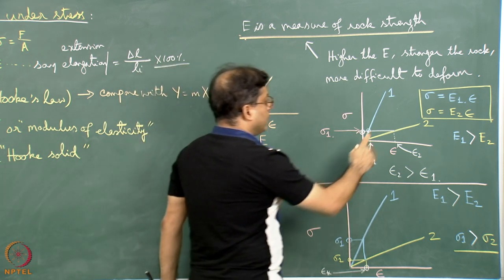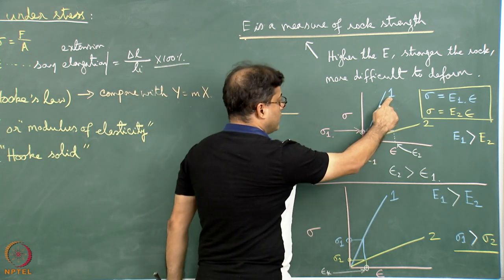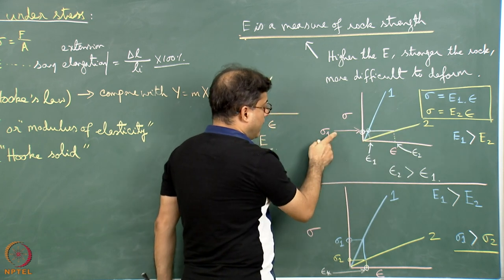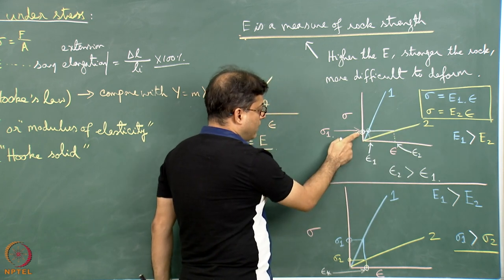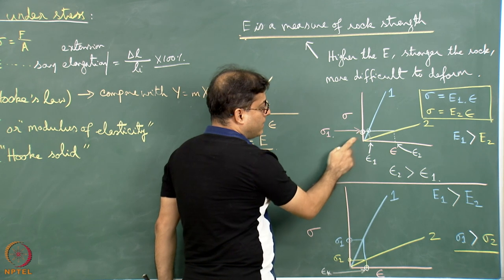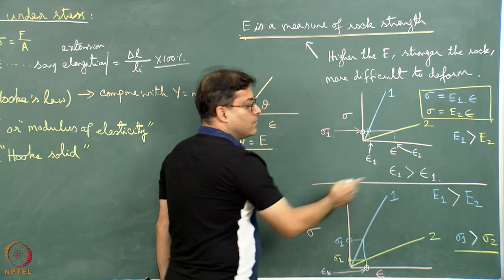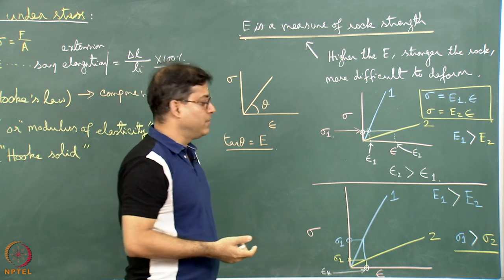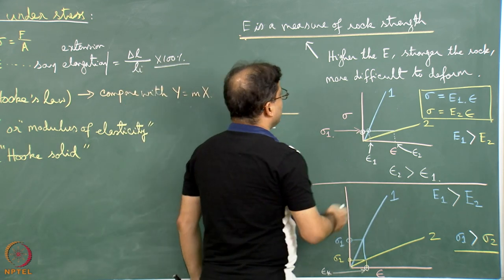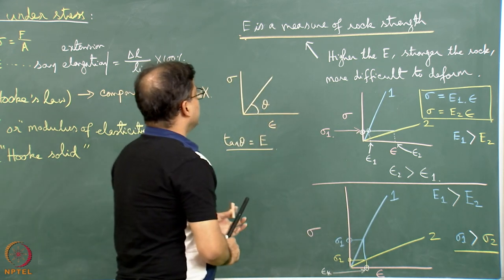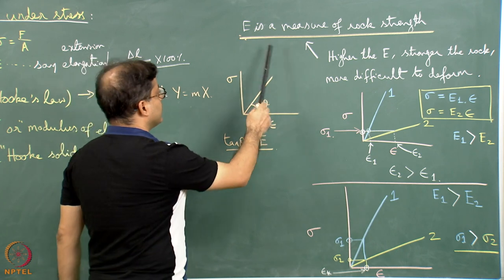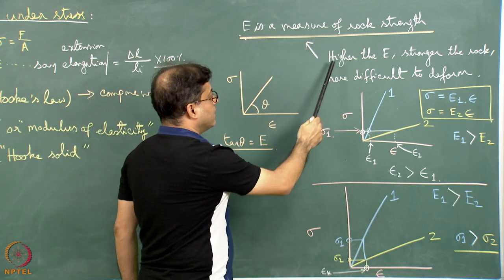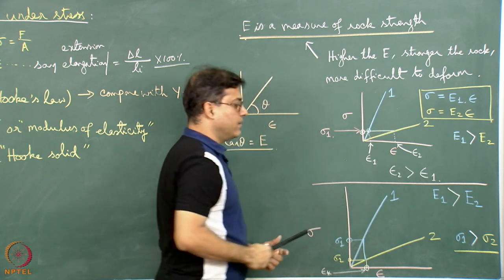What does this mean? Material 1 has higher strength, material 2 has lower strength, and with sigma 1 applied, material 2 deforms more easily — more strain has been produced. This proves the statement: E is a measure of rock strength, and higher the E, the stronger the rock and vice versa.